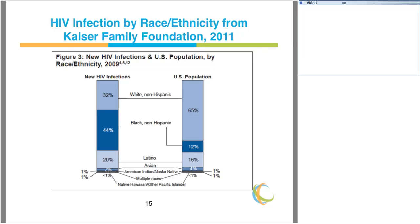This slide powerfully depicts the disproportionate effect of HIV infection on race and ethnicity in this country. African Americans make up just 12% of the U.S. population, yet they made up 44% of new infections in 2009 — a huge disparity between their total makeup in the U.S. population and the number of new infections they constituted.